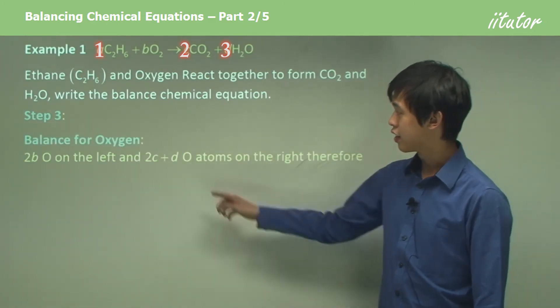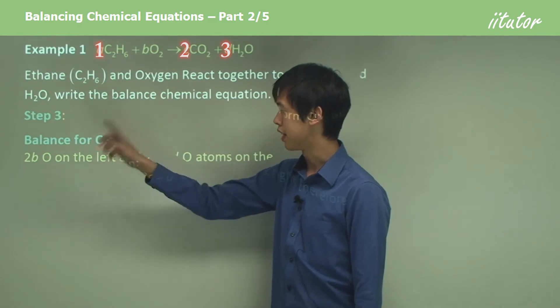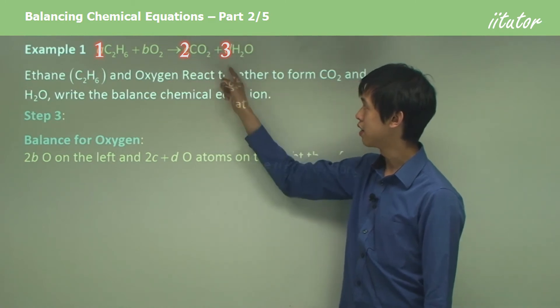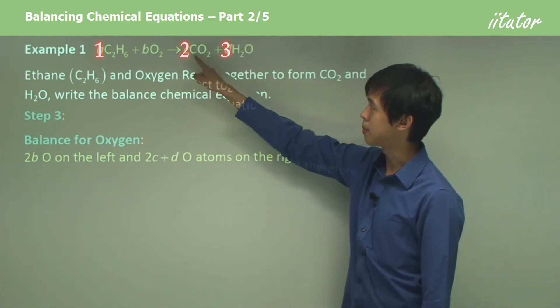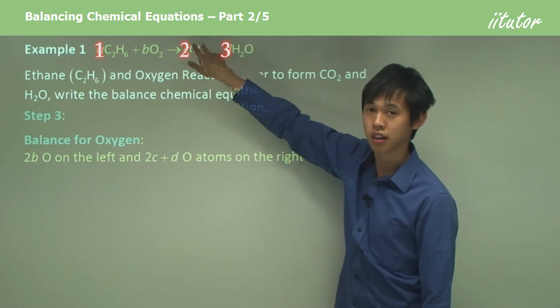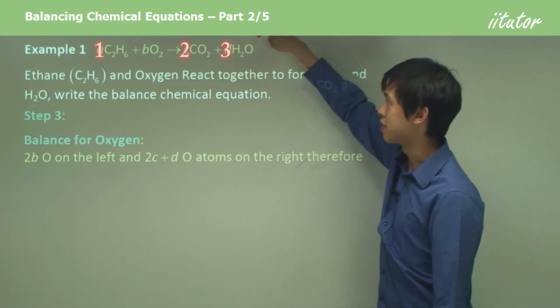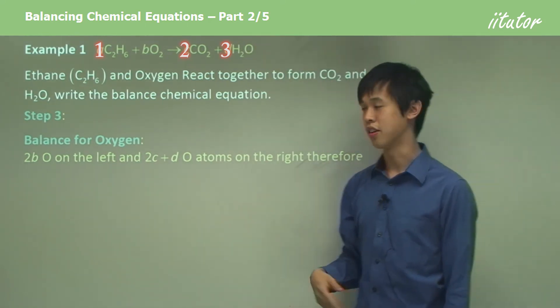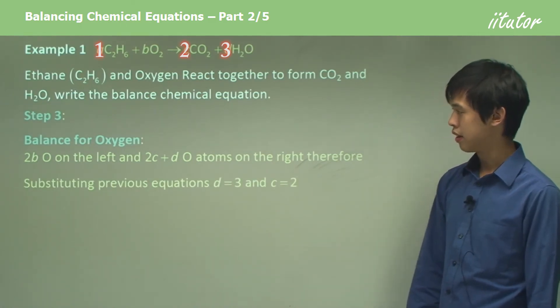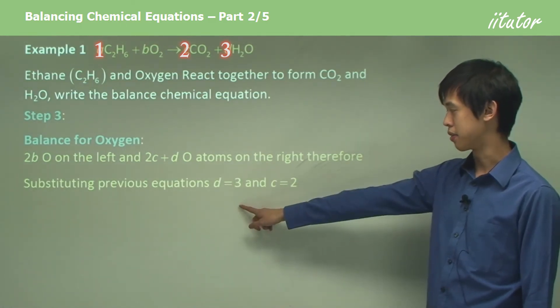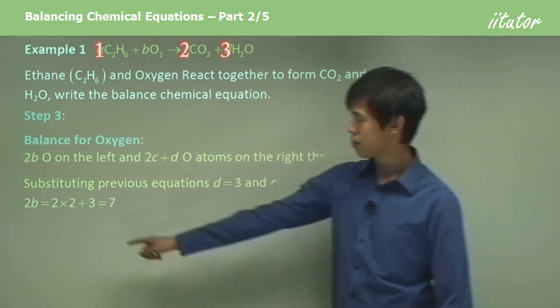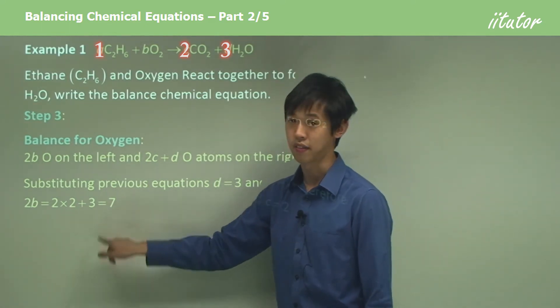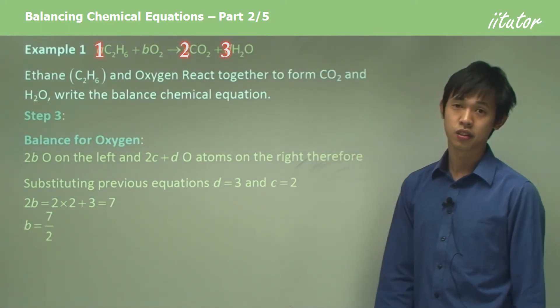And oxygen. There are 2 times B oxygen atoms on the left hand side and 2 times C oxygen atoms on the right plus D. So 2 times C, that's that many oxygen atoms here. And there's also D oxygen atoms here. So there are, in total, 2C plus D on the right hand side. Now substituting from the previous equations, we know that D equals 3 and C equals 2. 2B equals 2 times 2 plus 3, which equals 7. So B equals 7 on 2.